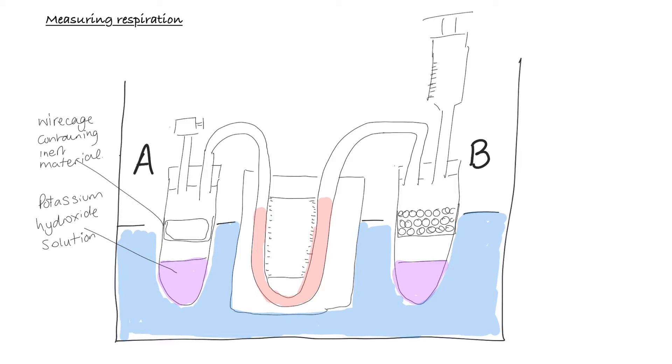In test tube B, we've got our wire cage containing, in this case, seeds, but it could be any living organism. You could put some wood lice in there, or if you had a big enough respirometer, you could put a mouse in. And at the bottom, we've got our potassium hydroxide solution. So, in the very middle, we've got our capillary U-tube, which contains a coloured liquid, and you can see the ruler along the side. So, essentially, this tube is filled with a coloured liquid.